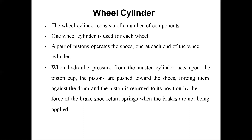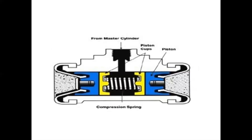The piston is returned to its original position by the force of the brake shoe return springs when the brakes are not being applied. Once we apply pressure on the brake pedal, fluid passes through; when we release the brake pedal, the piston returns to its original position. The wheel cylinder components include piston, compression spring, and seals from the master cylinder fluid lines.